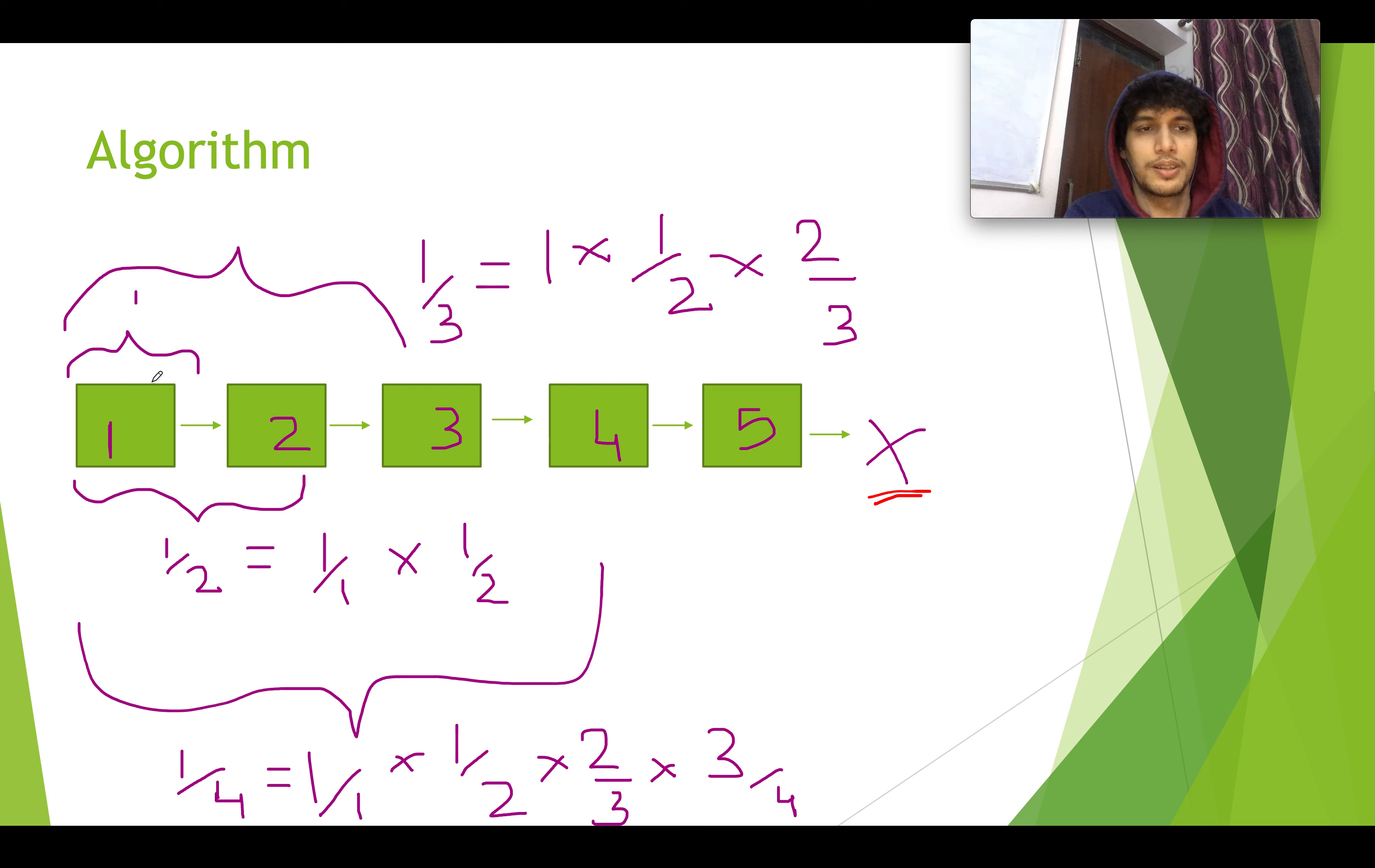If the linked list has one single node, what is the probability of choosing that element? It's 1. 1 by 1 is 1. And hence you are 100% sure that you are going to choose that element. If there are two nodes in that element, what is the probability of choosing 1 or 2? Either 1 or 2, it's 1 by 2. And how can you represent 1 by 2? 1 into 1, 1 by 1 into 1 by 2. I'll explain what I am trying to portray here.